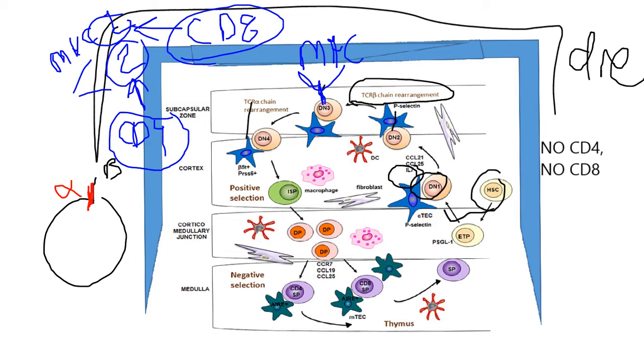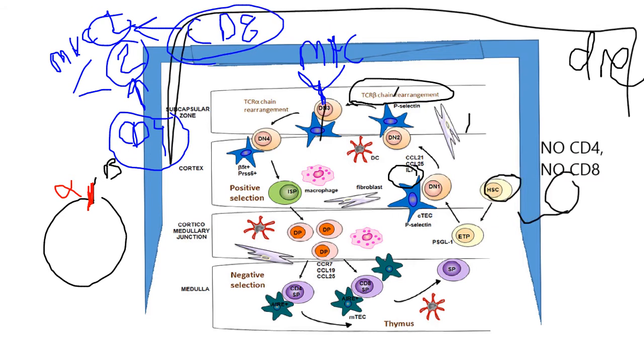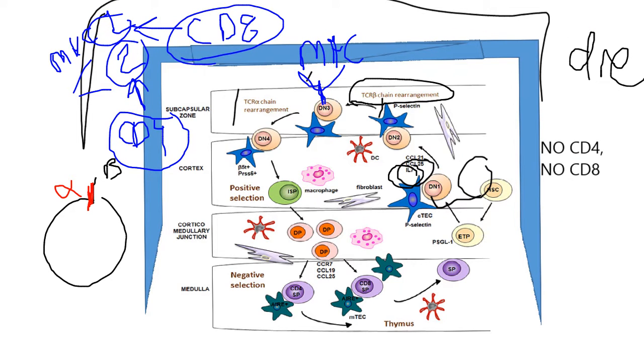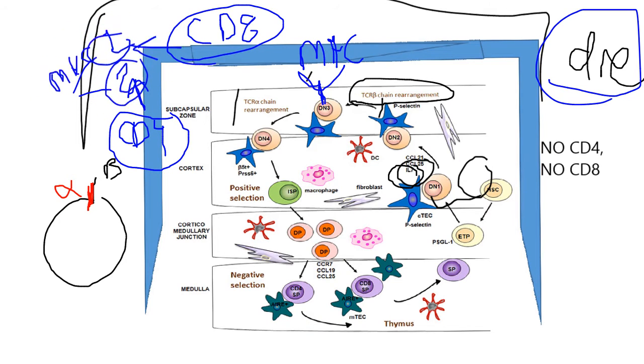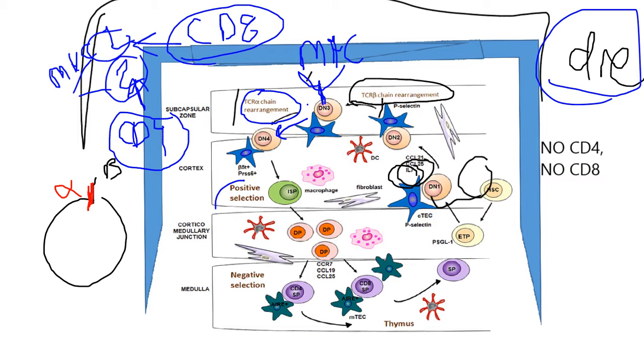If it can't bind to an MHC cell, it will die. But so long as it produces the MHC cells, then it will go on to the next step. It will start producing, it will start rearranging the alpha chain and go on to the next step, which is going to be positive selection.